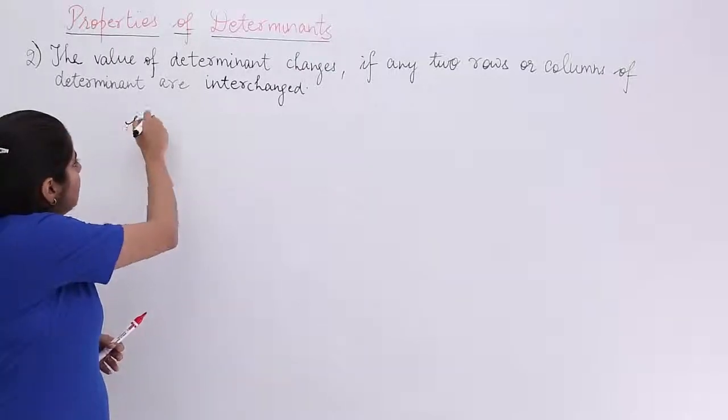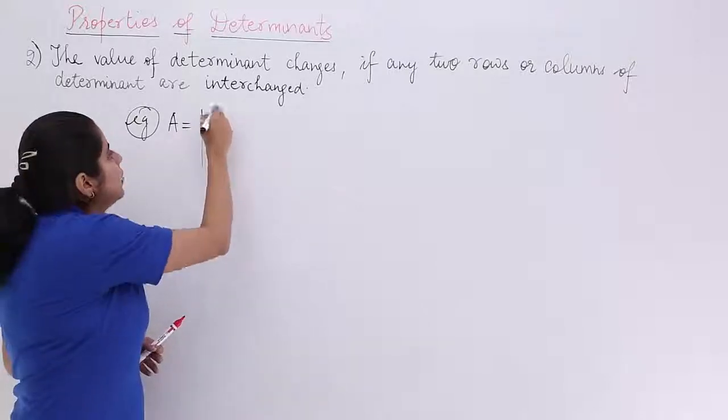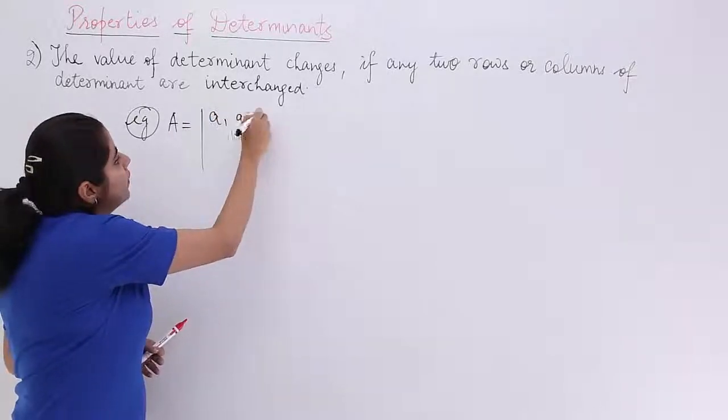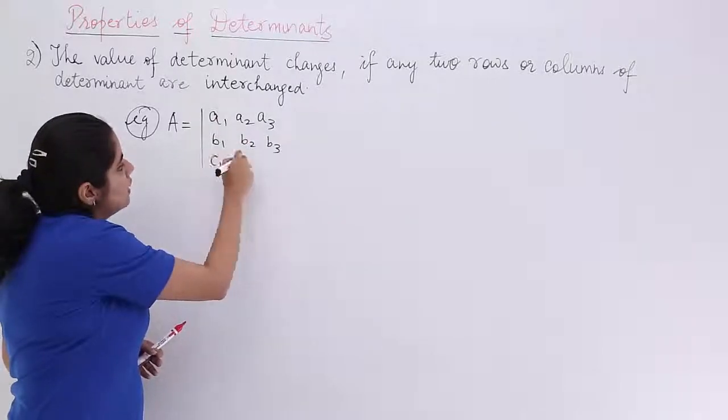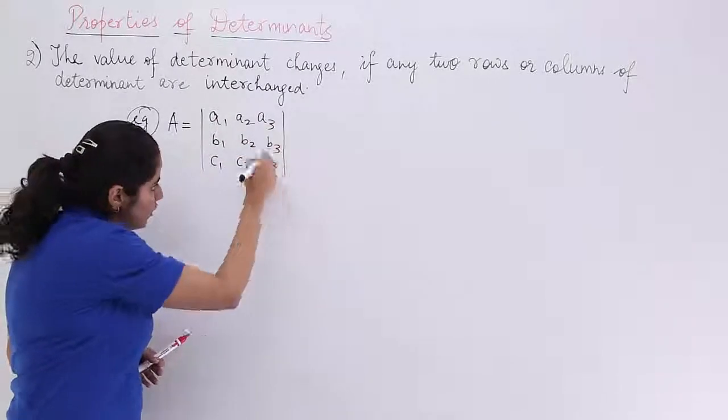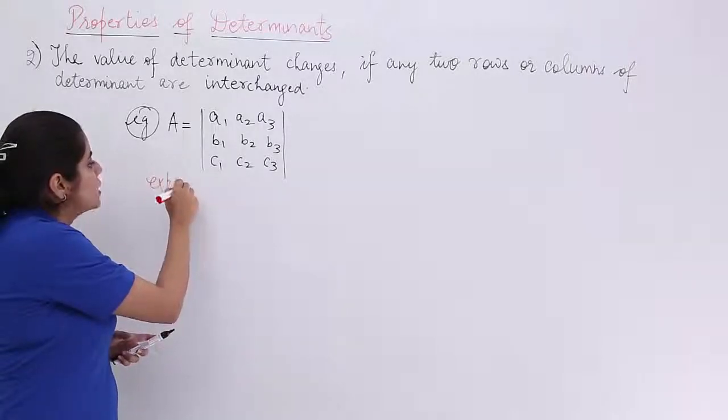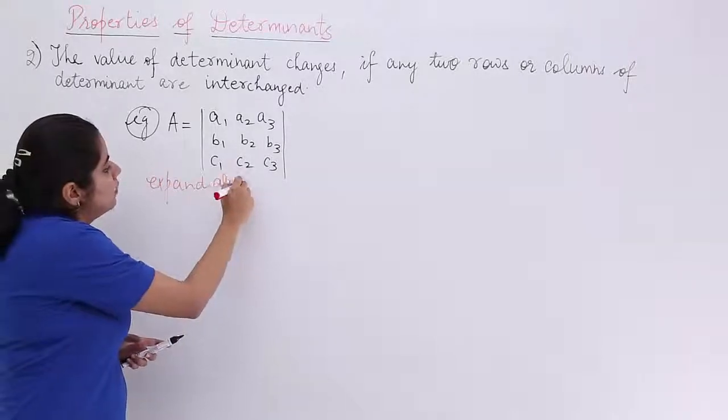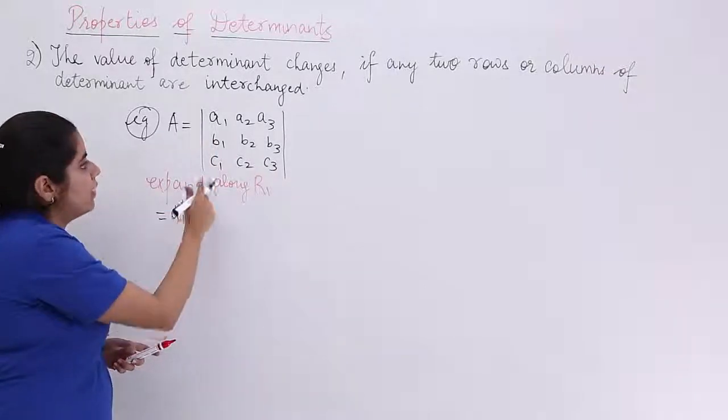I have a determinant and the name of the determinant is A. It is a general determinant having A1, A2, A3, B1, B2, B3, C1, C2, C3. How to evaluate this? Expand along row 1. I have already explained how to do it.